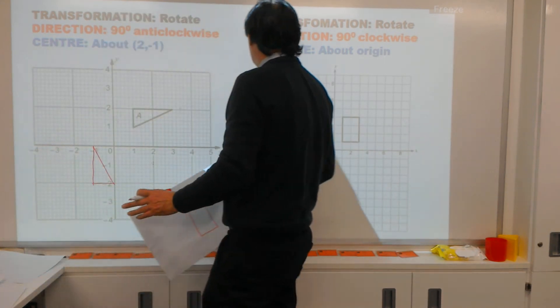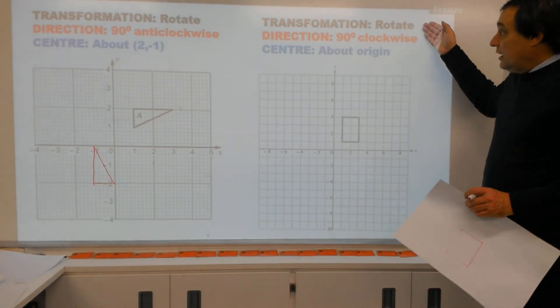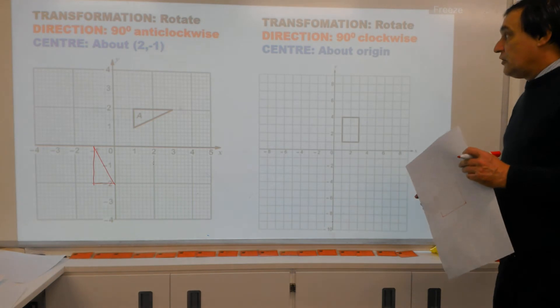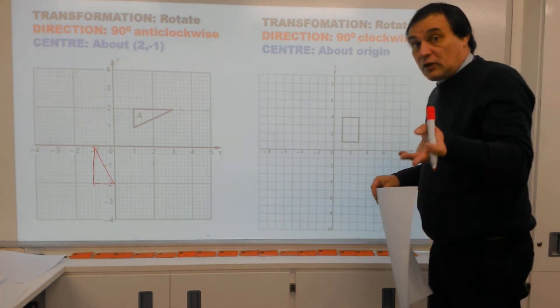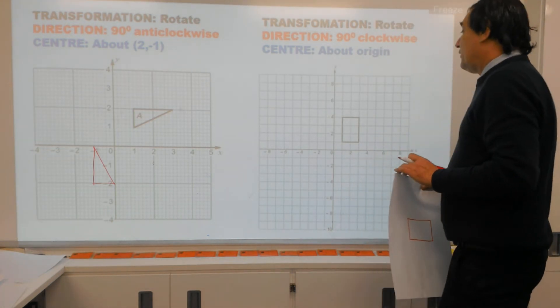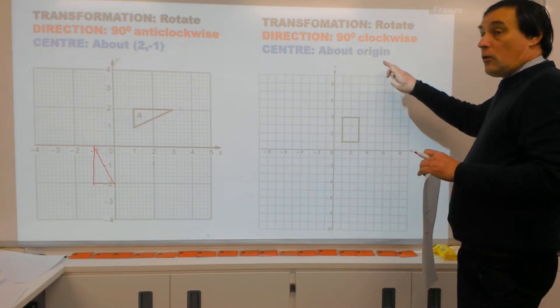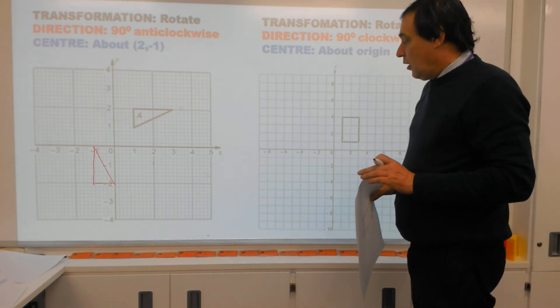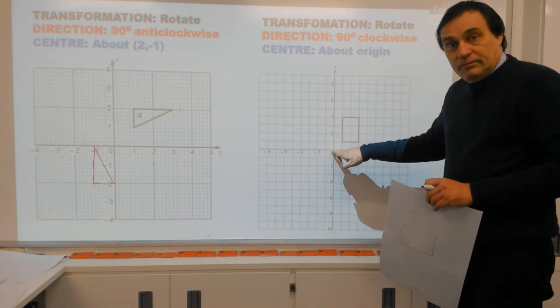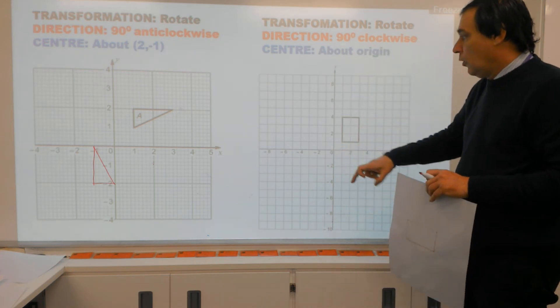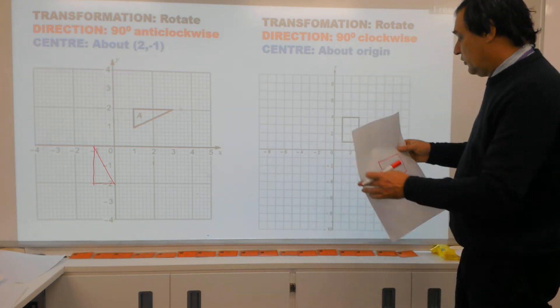OK. Let's have a look at this example here. Again, we're rotating. The direction this time is 90 degrees clockwise. So we've got to go with the clock this time. And the center is about the origin. If it ever says about the origin, it means (0, 0). OK. So the origin is (0, 0). So if you see that word without coordinates, that's what you do.